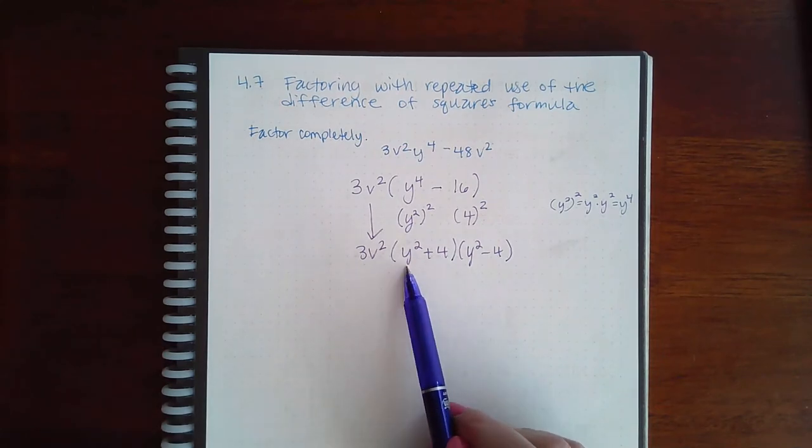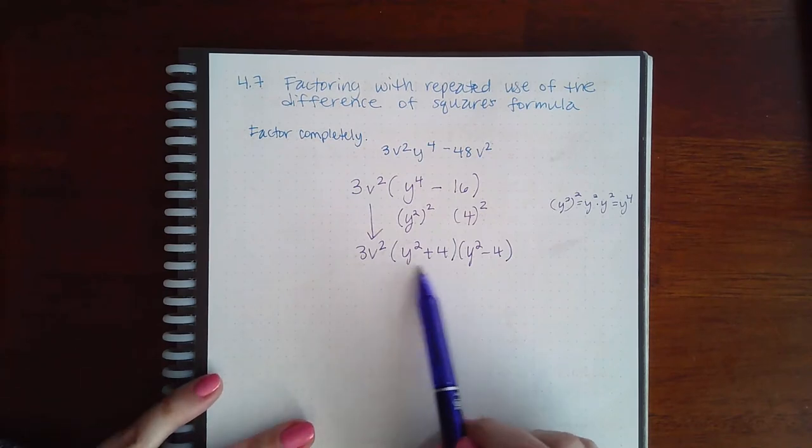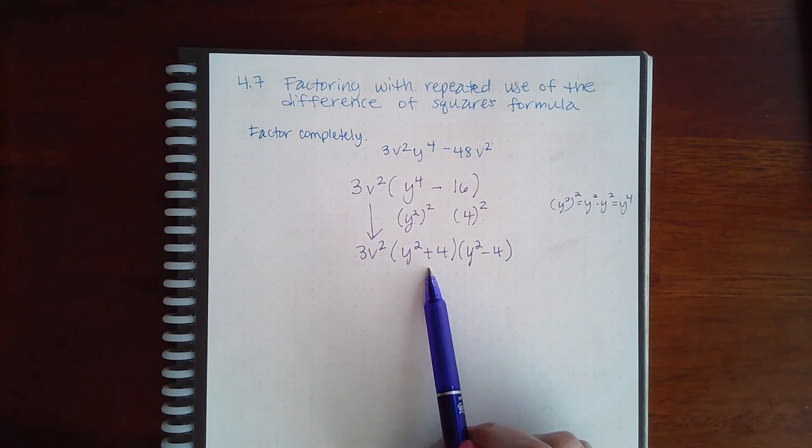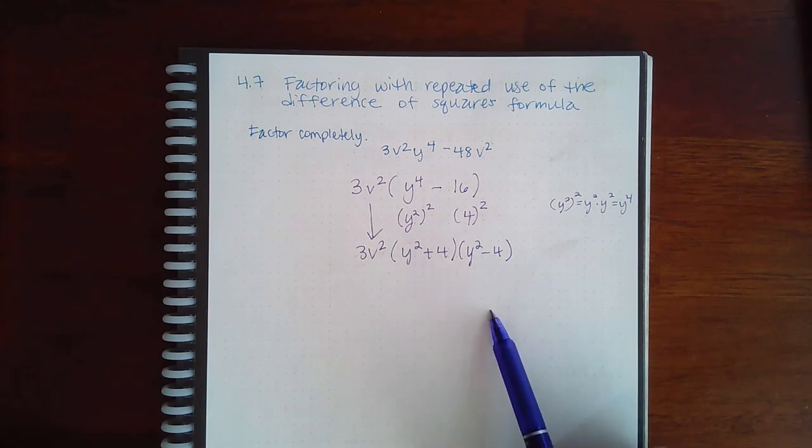I know that that is prime when it has a plus in the middle, so this factor cannot be factored anymore. However, over here I have a difference of two perfect squares which can be factored using the difference of squares formula.